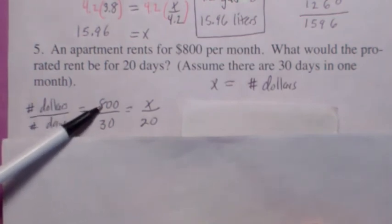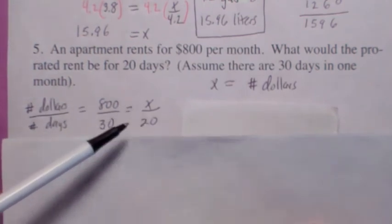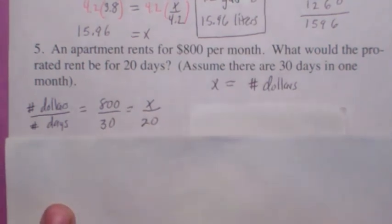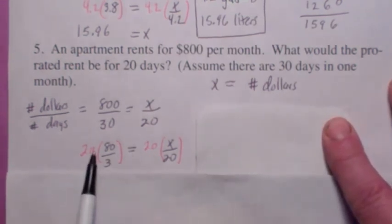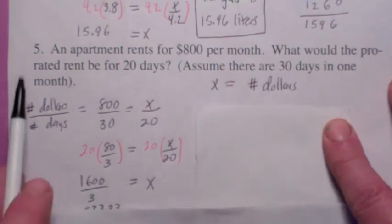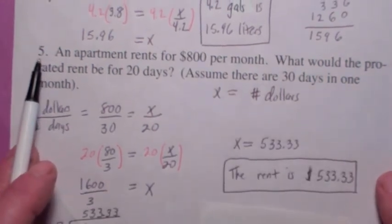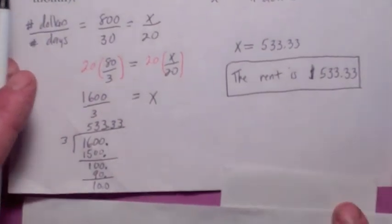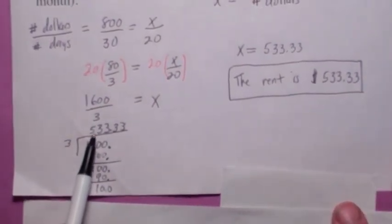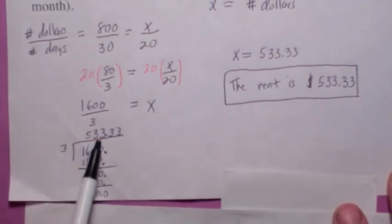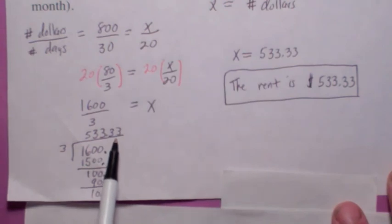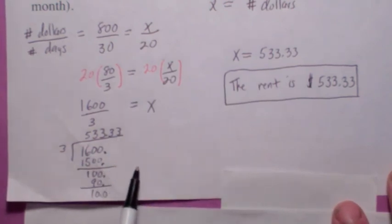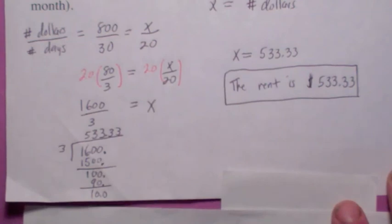So $800 is for 30 days. How many dollars would be for 20 days? So how would you solve this? You would multiply both sides by 20. On the right side you get x. On the left side you get $1,600 divided by 3. And if you want to use long division on that, you get 3 goes into $1,600. It doesn't go in evenly so you're going to have to round here. You get $533 and about 33 cents. Makes sense to round to pennies if that's money, right? So that's your answer. The rent would be $533 and 33 cents.